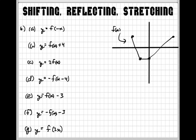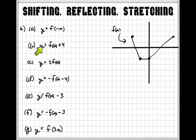You guys asked me to do this in class on a video so you guys can review it. So here it goes. We have shifting, reflecting, and stretching. And for number 6 and 2.5, it gives you guys this weird kind of looking notation, which some of you guys might not understand right away.